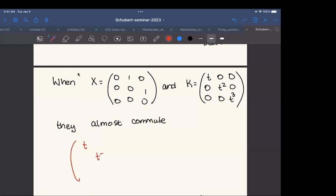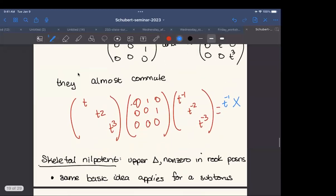So multiplying on the left is going to act on the rows. Multiplying on the right is going to act on the columns. The nonzero entries are always in the i-th row and i plus first column. So it's going to end up actually scaling this whole thing by the parameter t inverse. So they don't commute, but they commute up to this constant, projectively commute.